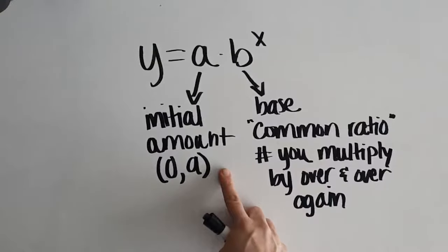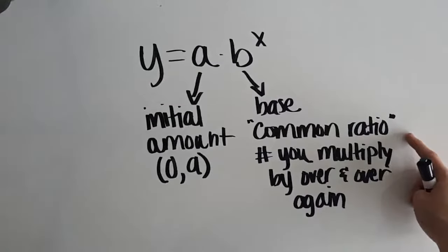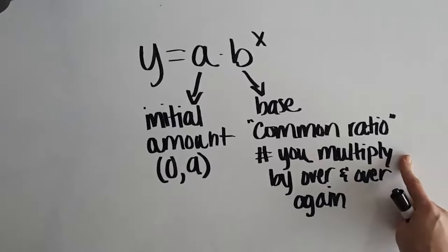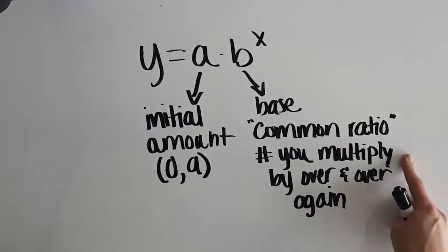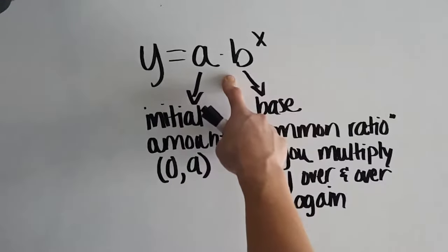If I say the bacteria starts with three cells, then a would be three. The b is your base. This is our common ratio. In other words, it's the number that you keep multiplying by over and over again. So if I say your money doubles, b would be two. If I say the amount of carbon has a half-life, b would be a half. If I say it increases by a factor of 1.5, b would be 1.5. So b is that number that you're repeatedly multiplying by when you look at the pattern.